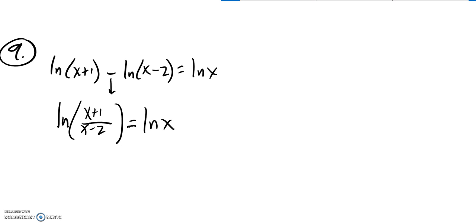So now I have natural log on both sides. I could do a little hand-waving and say that just means I can ignore the natural logs, or I could take e to the power of both sides. They both give me the same result, which is the natural logs are gone. x plus 1 over x minus 2 equals x.